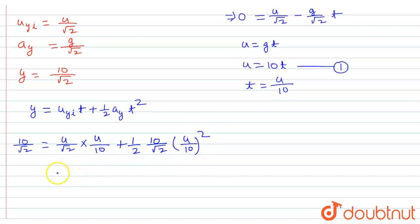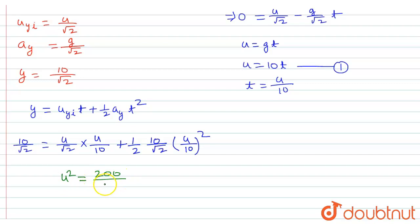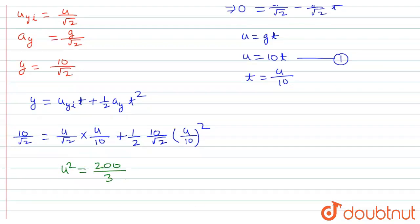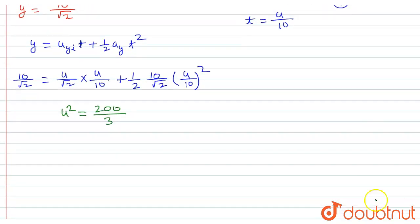Solving this expression, we get u² = 200/3. Therefore u = 10√2/√3 meters per second. This is the required answer.